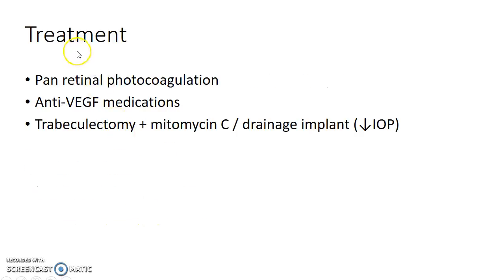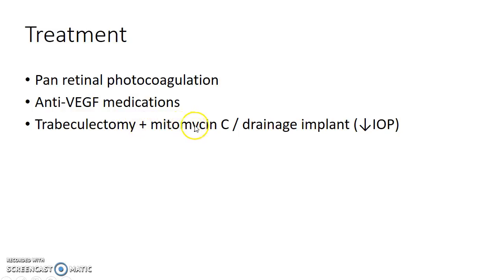Treatment of Rubiosis Iridis includes pan retinal photocoagulation and anti-VEGF medications. Trabeculectomy along with mitomycin C administration, or a drainage implant, can be placed to lower the intraocular pressure.